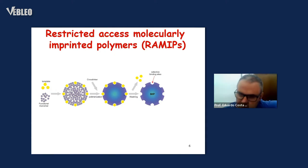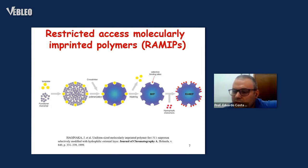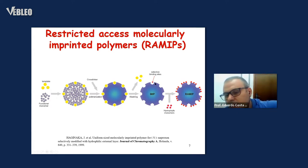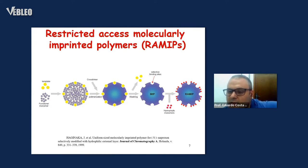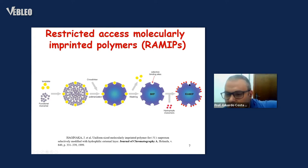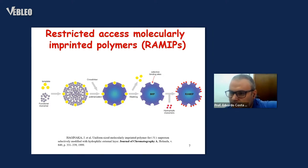To solve this problem, some years ago Professor Aghimaga proposed the concept of restricted access molecular imprinted polymers. The molecular imprinted polymers were treated with hydrophilic monomers that were positioned around the polymer surface. These hydrophilic groups act as a barrier that avoids the binding of proteins from the sample, while the selective binding sites are maintained without hydrophilic groups and can still bind to the template. This concept was developed 20 years ago, and different strategies to obtain restricted access materials have since been developed.